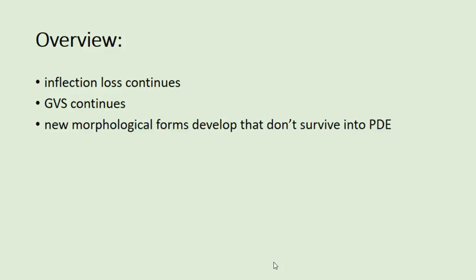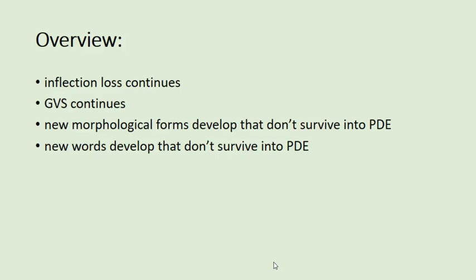New morphological forms develop that don't survive in present-day English. This is a period of new innovations, but not every innovation lasts. Any innovation has to be propagated, adopted, and has to stick. We get an explosion of different language forms because of all that survives, but not everything sticks. This includes words — there are tons of new words that develop that don't survive in present-day English. You can learn more about that in the PowerPoint slideshow on the inkhorn controversy.